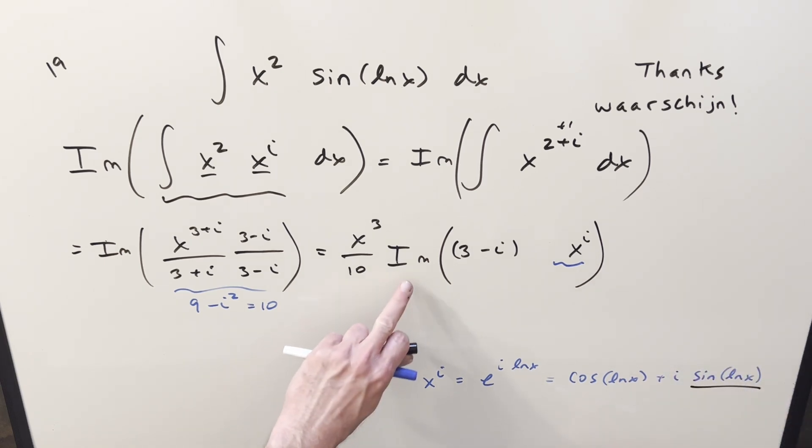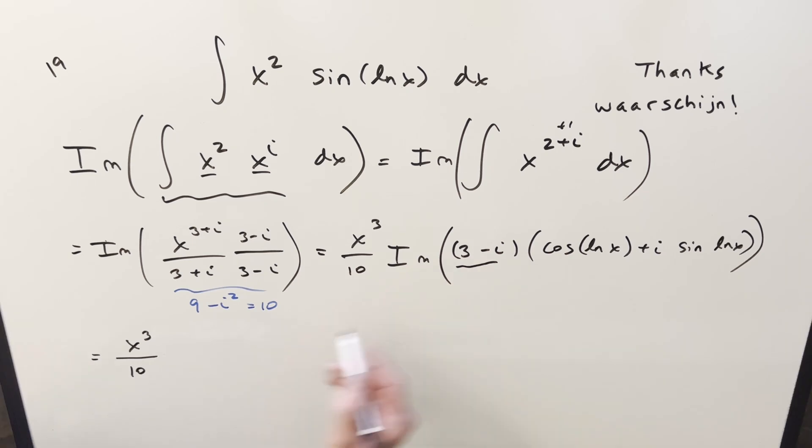So now at this point, just notice that even though we only want the imaginary part, I can't just throw this back in here and ignore this because we still have to multiply it times this other part and see what happens. So let's take this and we'll plug it all in for x to the i, and then we can multiply it out.